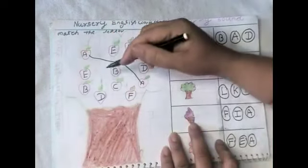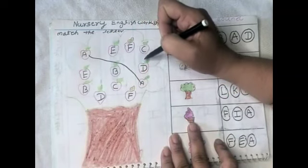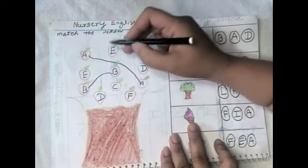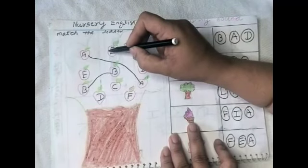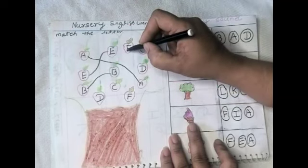B, where is B? C, D, here. Where is B? B. E, where is E? E. F, where is F?